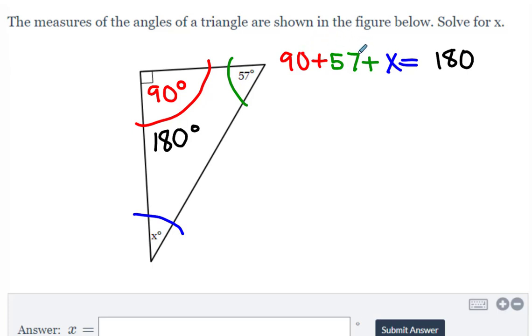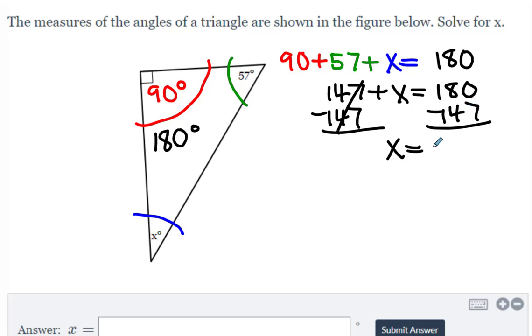I'll combine 90 and 57, that gives me 147, so I've got 147 plus x is equal to 180, and then I'll subtract 147 from both sides. Again, just solving basic equations, and we have x is going to be equal to, let's see, that would give us 3 to get us to 50, that would give us x is equal to 33.